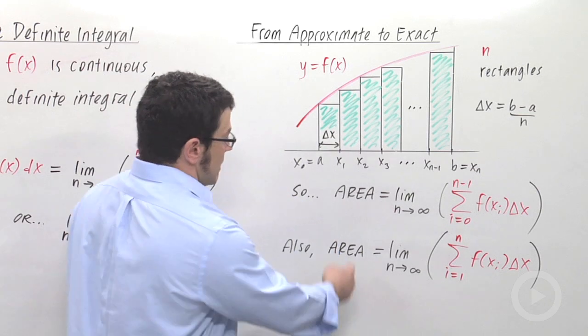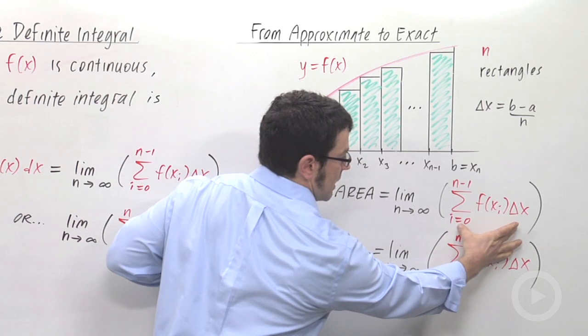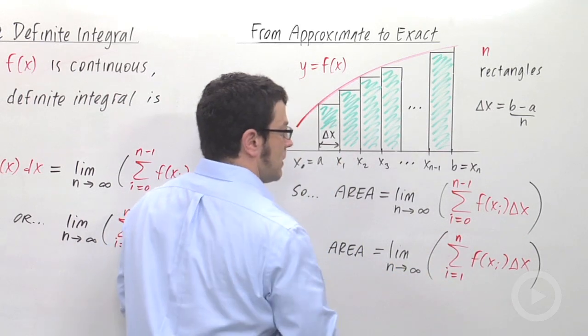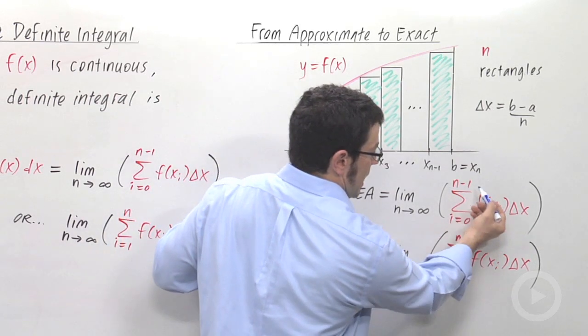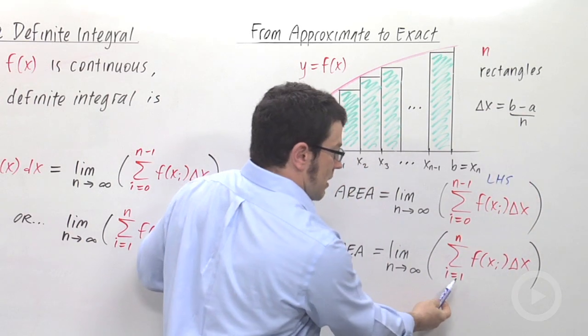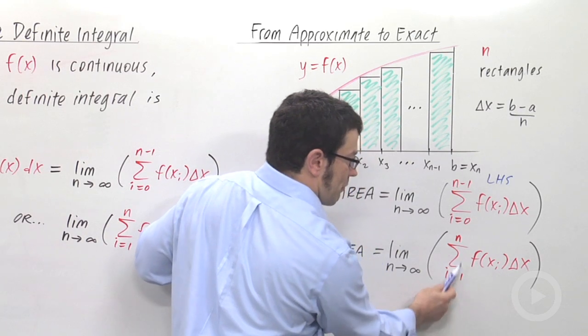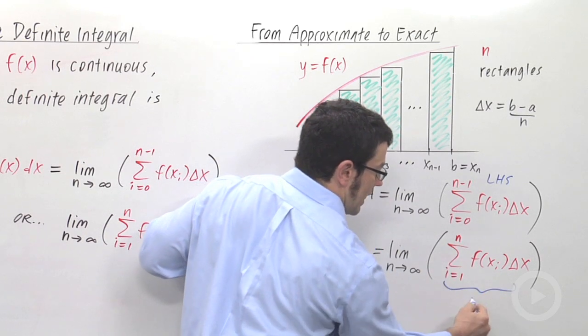Take a look at this. The area equals the limit as n approaches infinity of this sum. This is the left-hand sum, right? The sum from i equals 0 to n minus 1 is a left-hand sum. But we can also sum from i equals 1 to n. The sum looks exactly the same, but the indices are different. We're going from 1 to n. This makes it a right-hand sum.